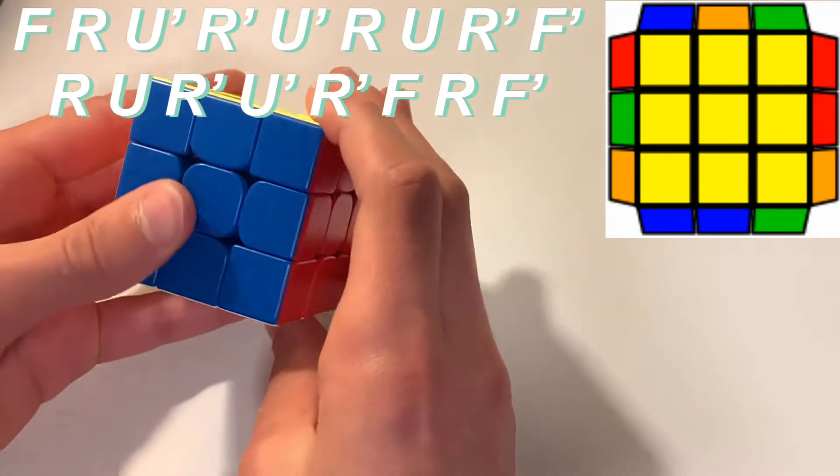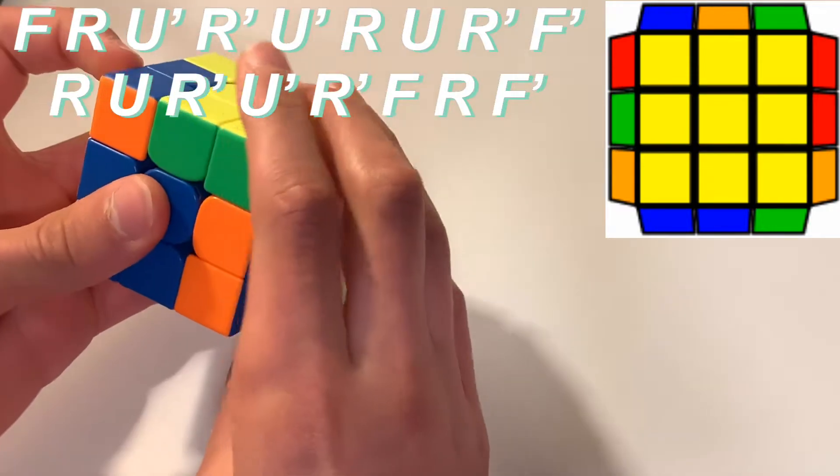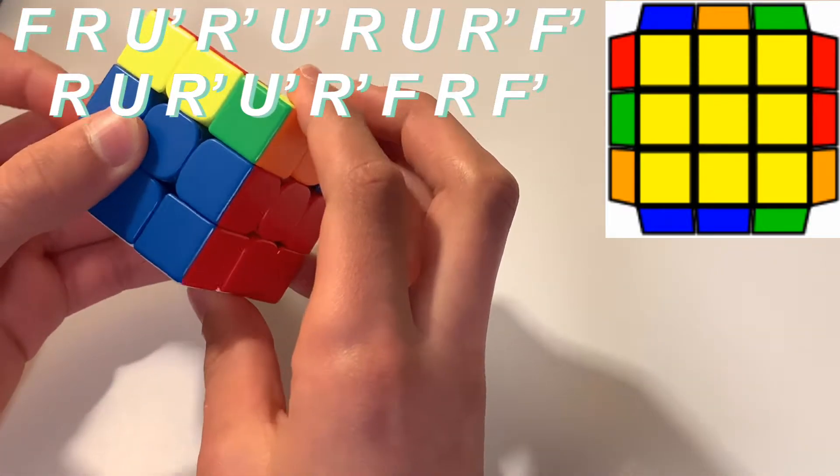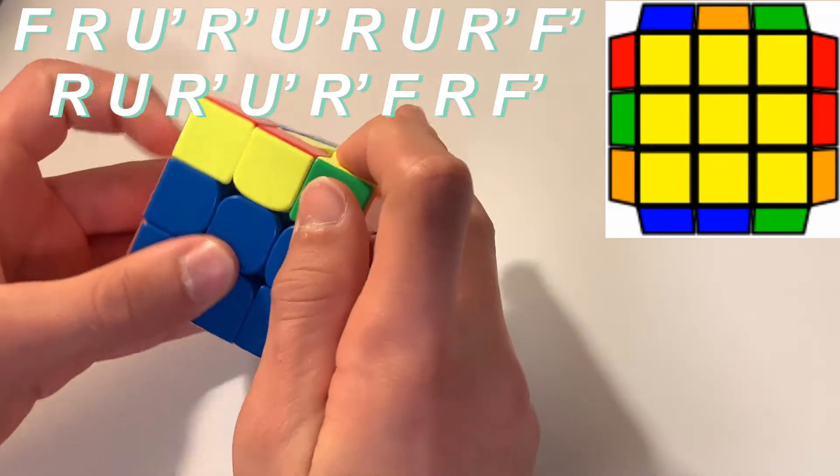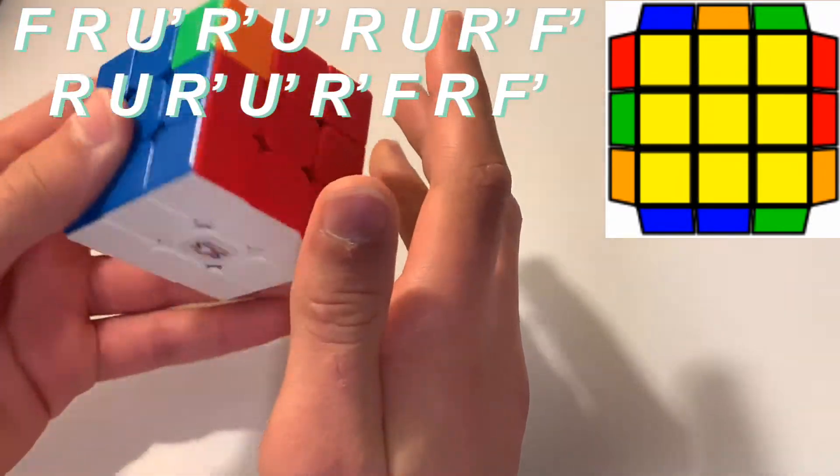So a little bit quicker, it would go like this. Left hand, right hand. And while you're doing that, you need to put your right hand like this so you can do your sexy move and then your sledgehammer. And that's how you do the Y perm finger tricks.